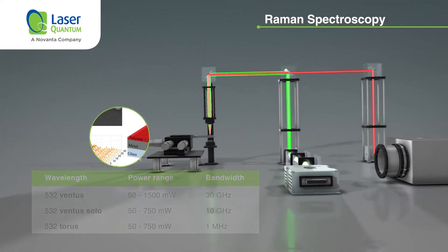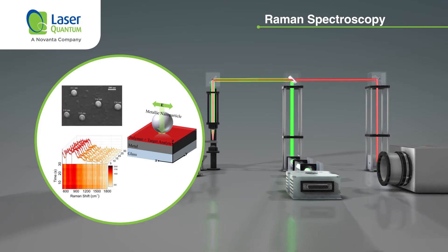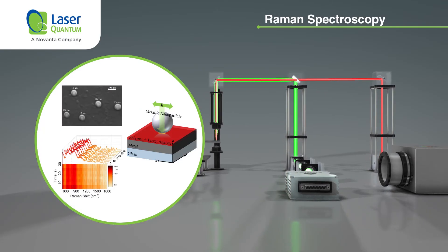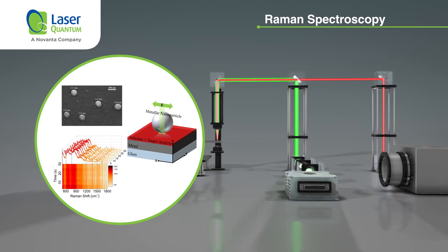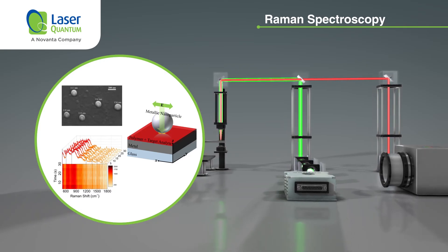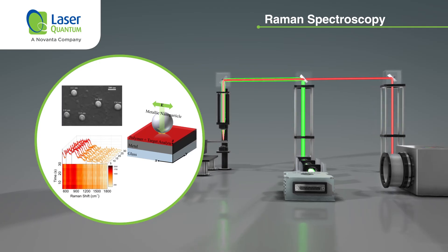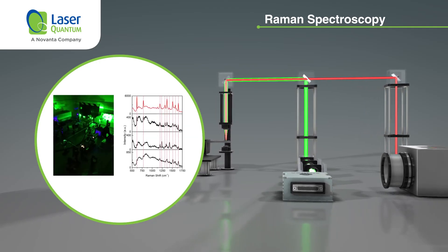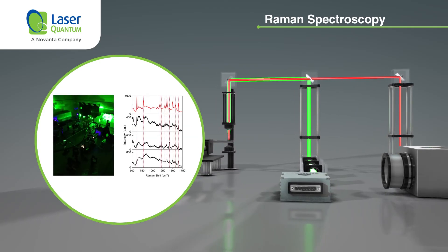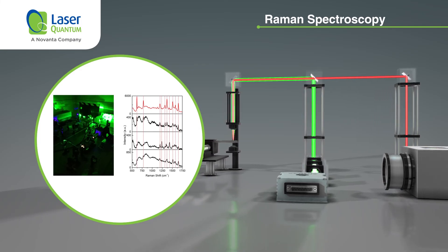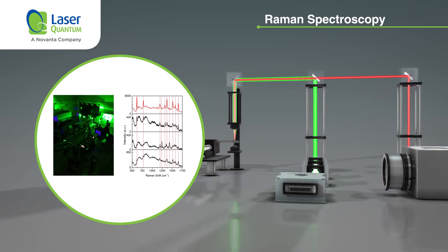Raman spectroscopy can be used in any non-destructive microscopic chemical analysis and imaging application. Fields commonly used include all levels of the pharmaceuticals value chain, as well as phase transitions and mineral identification, and carbon defect analysis or alloy composition in semiconductors.